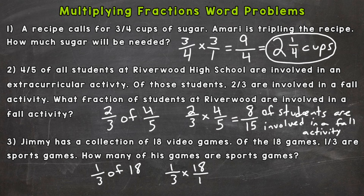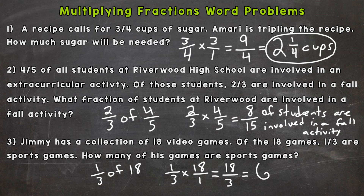It does not change the value. Multiplying straight across: 1 times 18 is 18, and 3 times 1 is 3. We end up with an improper fraction, so let's divide — 18 divided by 3. How many whole threes can we pull out of 18? Six. That hits 18 exactly, so we do not have a remainder; this works out to be a whole number. And that makes sense — how many of his games are sports games? Six are sports games.